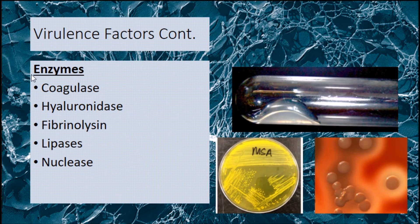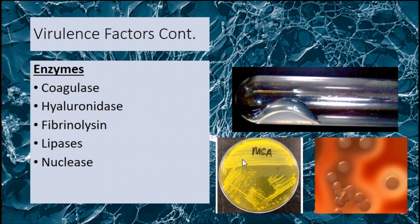Continuing with the virulence factors, there are a few enzymes that Staph aureus produces: coagulase, which converts fibrinogen to fibrin; hyaluronidase, which hydrolyzes hyaluronic acid in connective tissue, promoting the spread of staphylococci within the tissue — this is very important; fibrinolysin, which dissolves fibrin clots; lipases, which hydrolyze lipids; and nuclease, which hydrolyzes DNA.